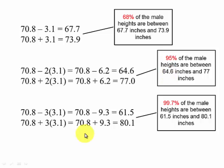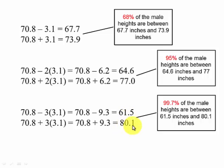And going three standard deviations above and below the mean gives 70.8 minus 9.3 and 70.8 plus 9.3, which produces 61.5 and 80.1. So just about all the data — 99.7% of the males — are going to be between 61.5 inches and 80.1 inches.